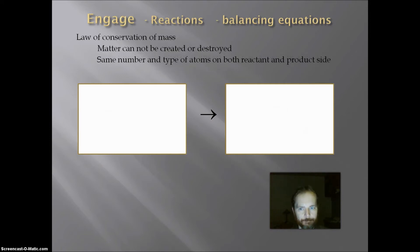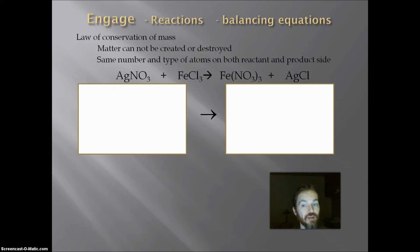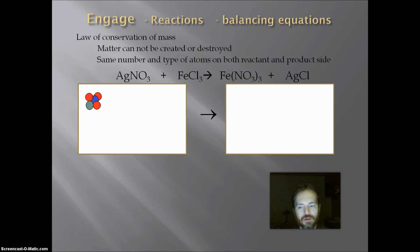Let's look at another example. In this case we have a double displacement reaction: silver nitrate plus iron chloride. I want to note that both sides of my reaction have NO3 groups. It becomes easier if I balance those NO3s as a group rather than balance the individual nitrogens and oxygens. My AgNO3 gives me one silver and one NO3, and I am going to count the NO3s as a group.